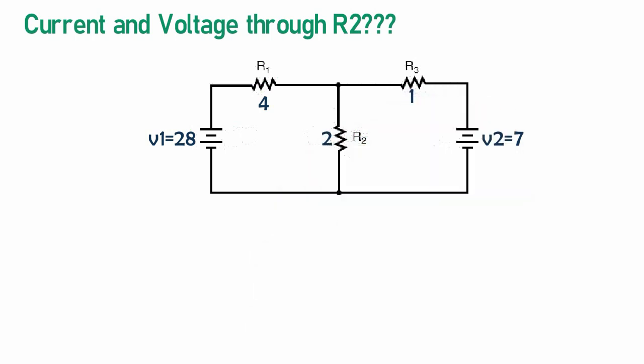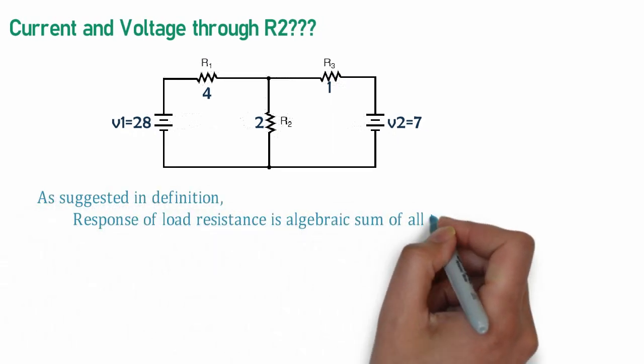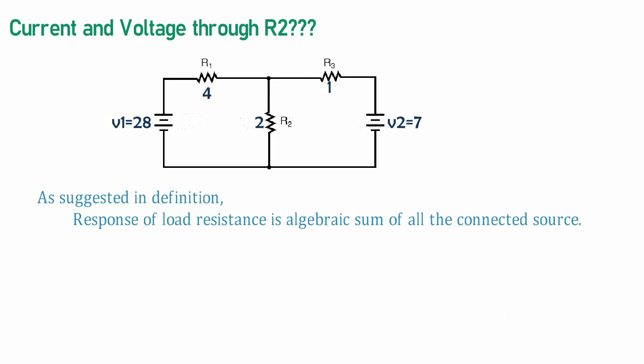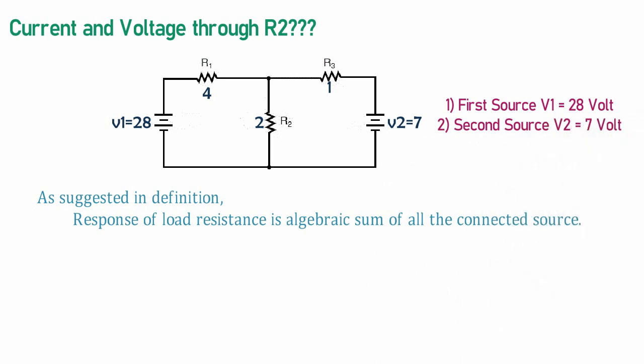Here, as we know, response of load resistance is algebraic sum of all individual source connected to it. I have taken two sources of 28V and 7V. Let's start finding response stepwise.